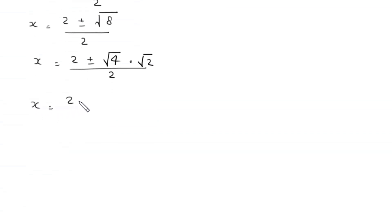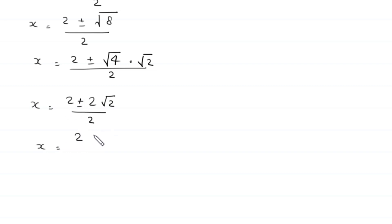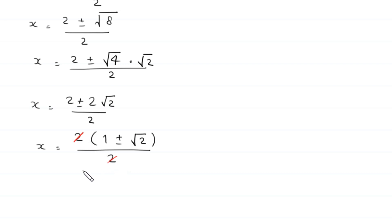Simplifying [2 ± 2√2] / 2, we factor out 2 from the numerator to get 2(1 ± √2) / 2, and the 2's cancel. So x₁ = 1 + √2 and x₂ = 1 - √2.